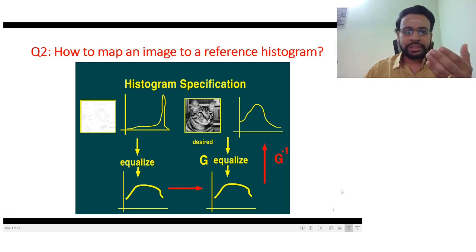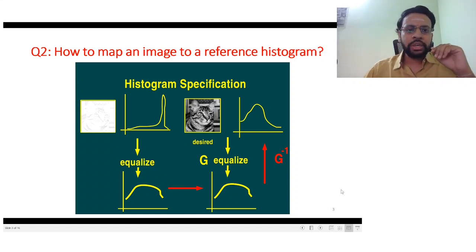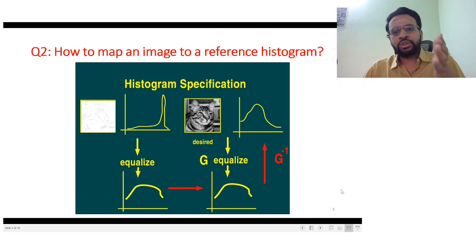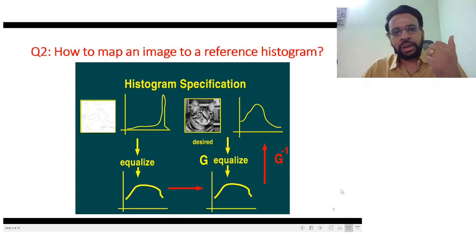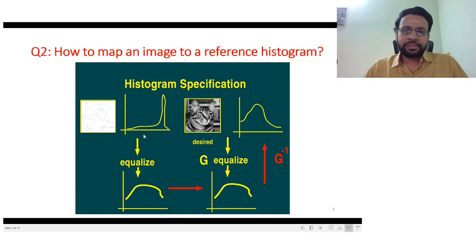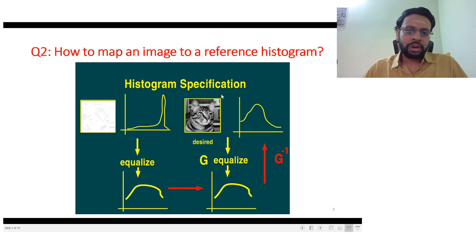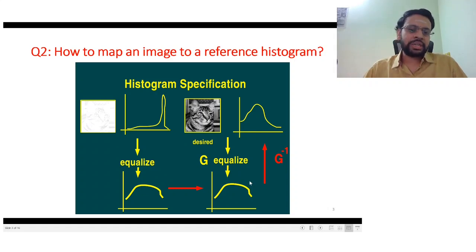We want to map to a reference histogram that we know because of our prior knowledge about that particular image. How can we achieve that? First, apply histogram equalization to the given image — you get one transformation. For the target histogram also apply histogram equalization — you get another transformation. Now for each value in the first, find out the corresponding mapping in the second histogram.